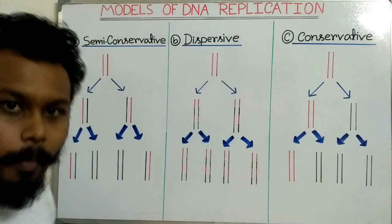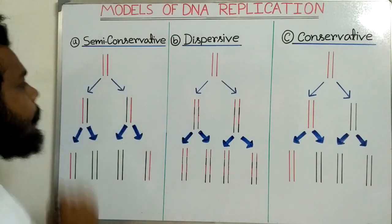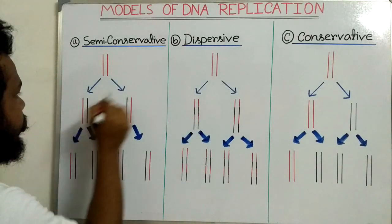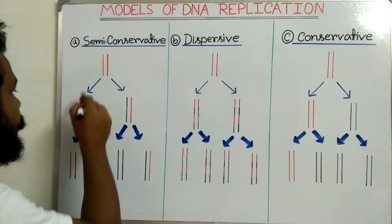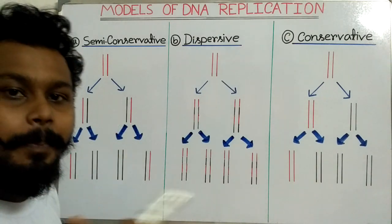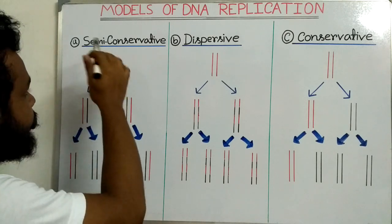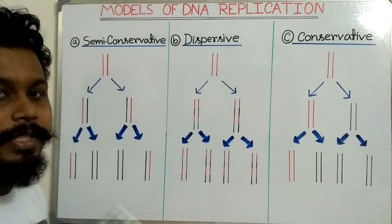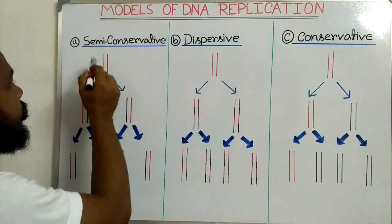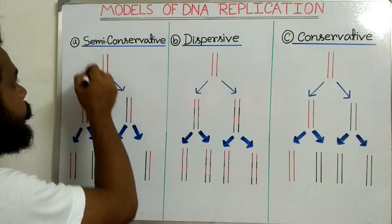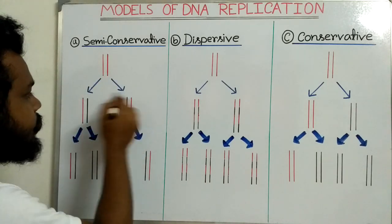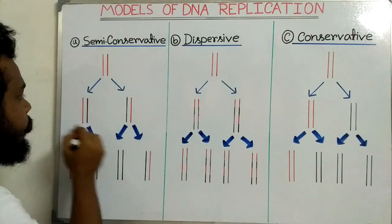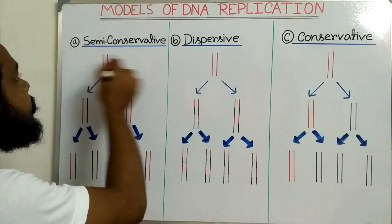In the semi-conservative model, first the parental DNA strands get separated from each other, and both of these parental DNA strands act as a template to make new DNA strands — that's why it is also called the template model. It is called the semi-conservative model because one strand of the parental DNA is present in each new progeny DNA molecule, meaning one strand of the parental DNA is conserved in both progeny molecules.